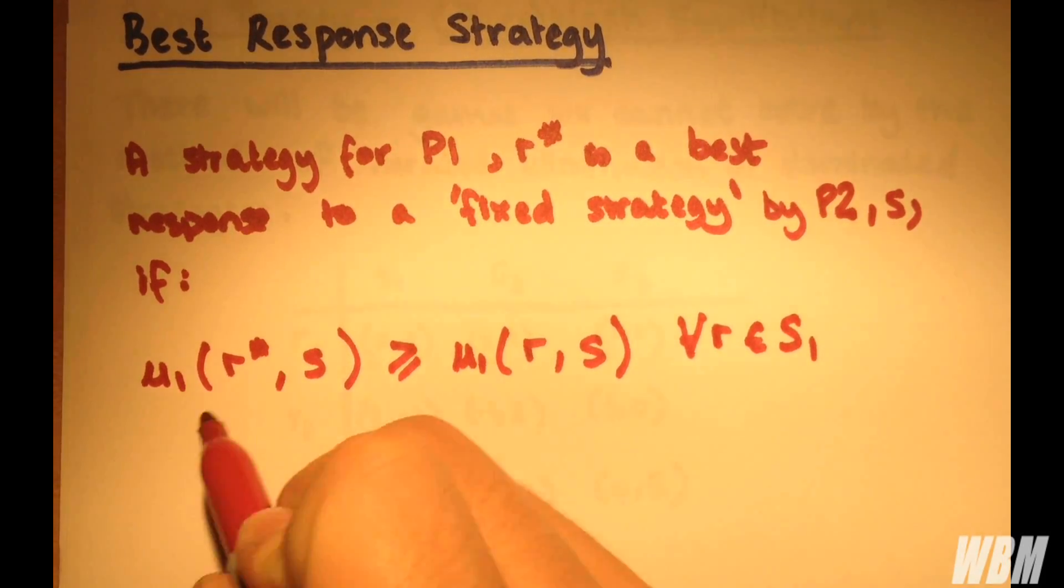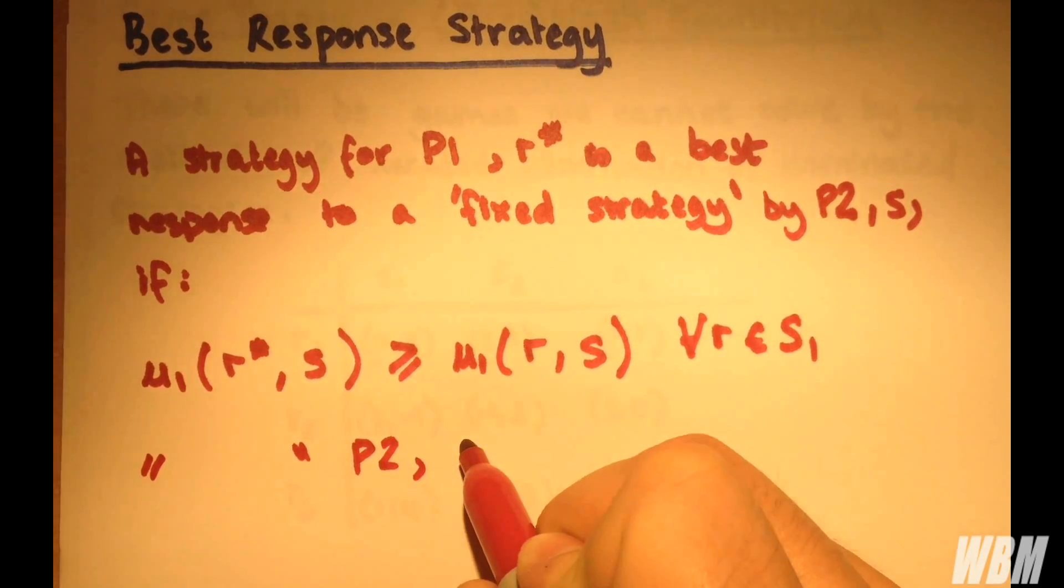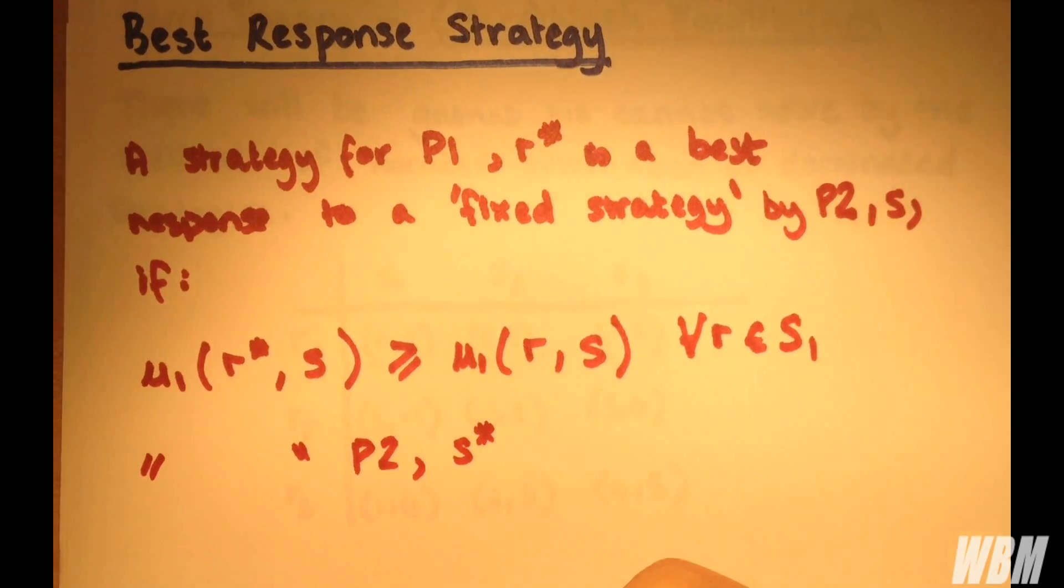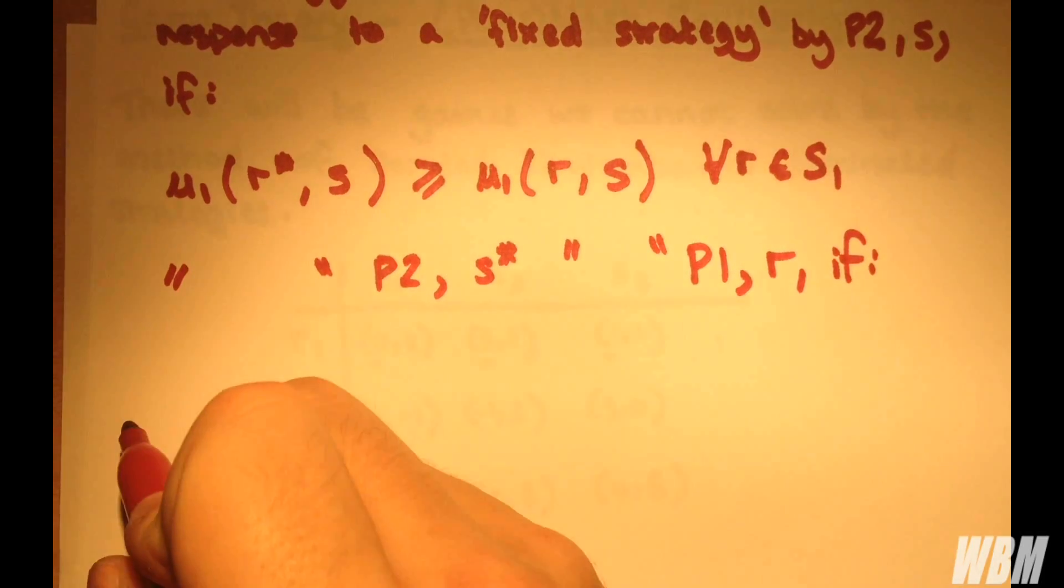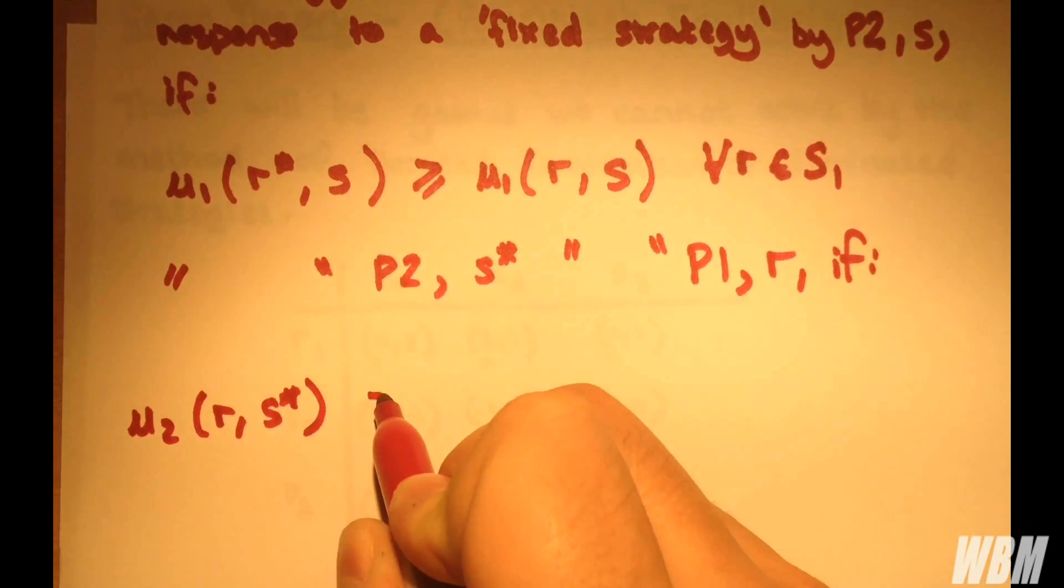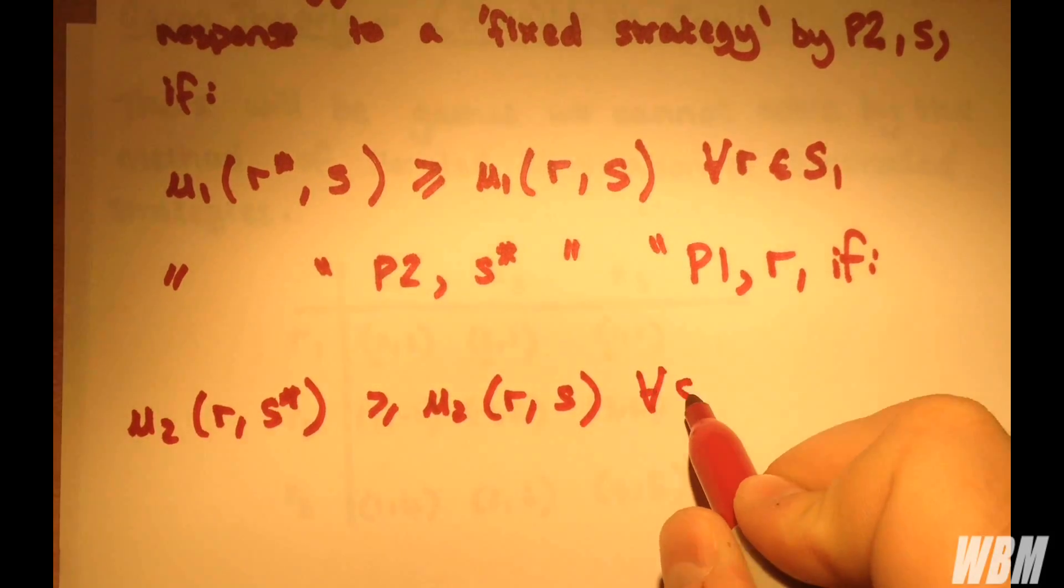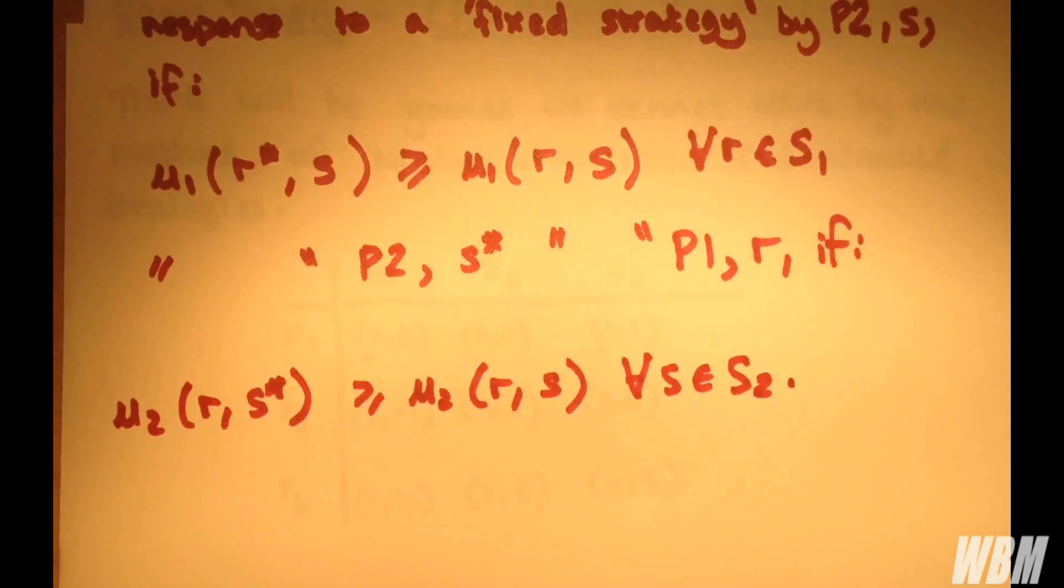And obviously we have the same for player 2. So a strategy for player 2, and of course in this case we have variable S, is the best response to a fixed strategy by player 1, which will be R if U2 for R and S is greater than U2 for R and any other value for S in that set of strategies. Straightforward.